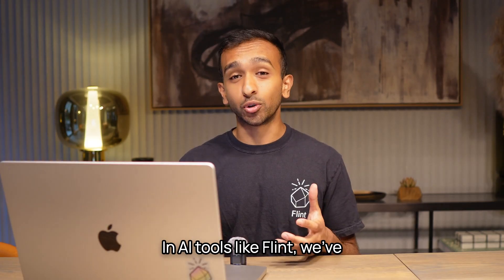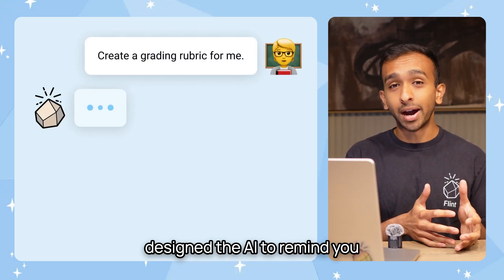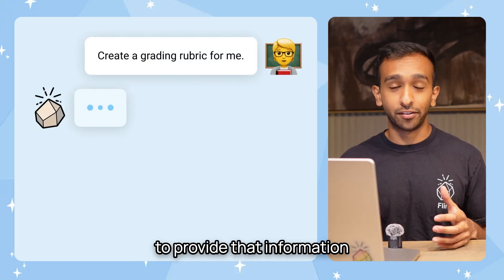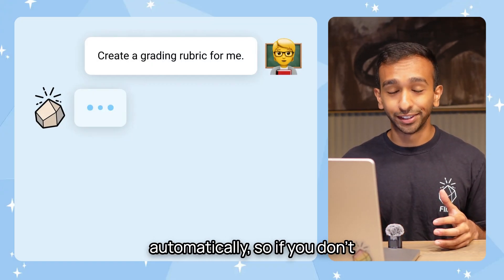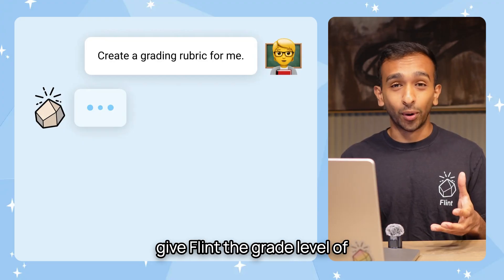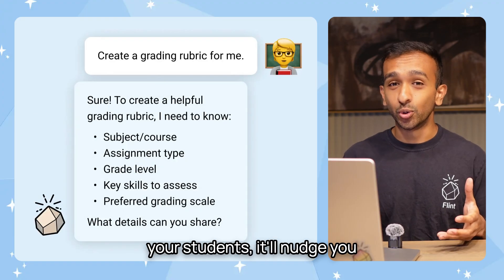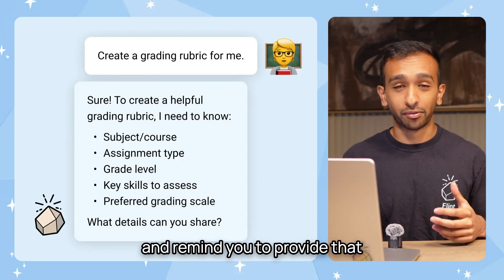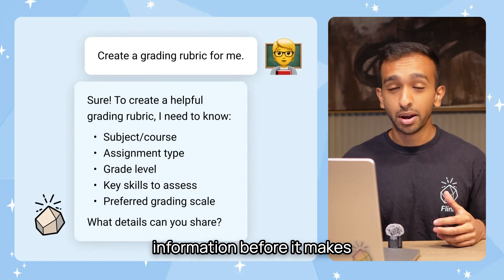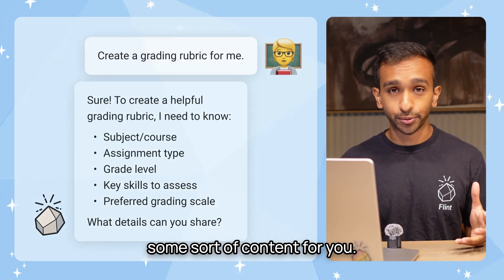In AI tools like Flint, we've designed the AI to remind you to provide that information automatically. So if you don't give Flint the grade level of your students, it'll nudge you and remind you to provide that information before it makes some sort of content for you.